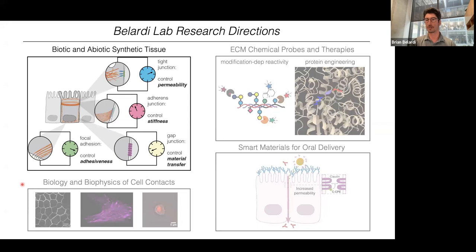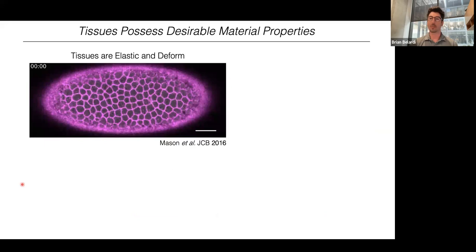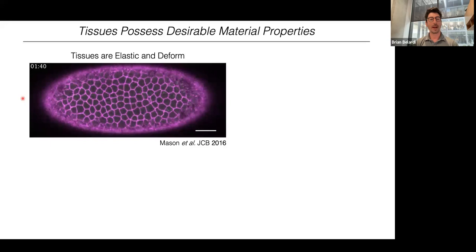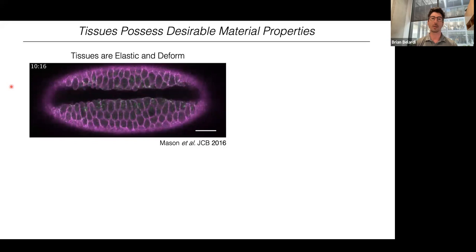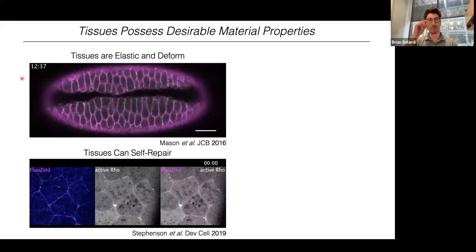Scientists and engineers have long marveled at tissues. Tissues can adopt some pretty incredible three-dimensional and convoluted morphologies, and they also have really desirable and often enviable material properties. For one, tissues are indeed elastic. I'm going to show you a video on the top left of a Drosophila embryo undergoing ventral furrow formation. Initially the cells within the tissue are quite compact, but as a central cavity forms, these cells become highly elongated in one direction — so tissues can deform considerably.